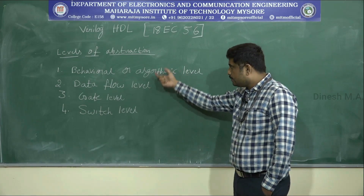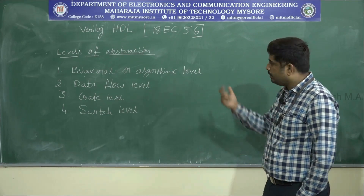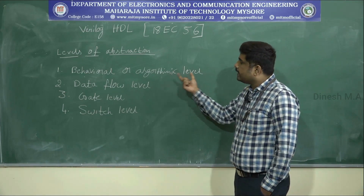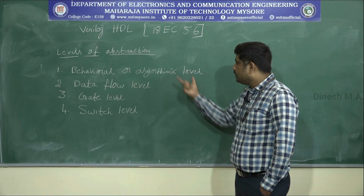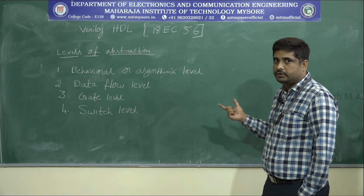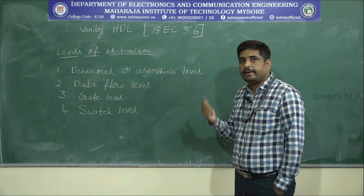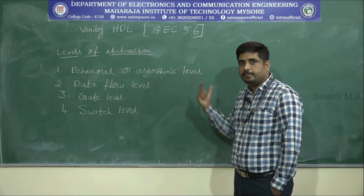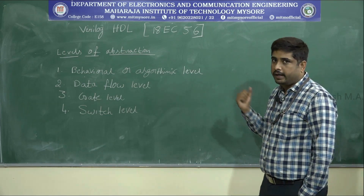Out of these four, we will discuss three in detail in later modules. The first one, behavioral description or behavioral level, is also called algorithmic level description. It describes the function in terms of an algorithm, which is why it is called algorithmic level description. This is specially designed for sequential circuits — for example, flip-flops, which depend on the present as well as the past. That's why we choose behavioral description for sequential circuits. Behavioral description looks similar to C programming.